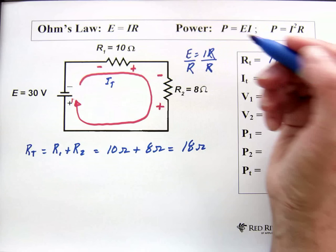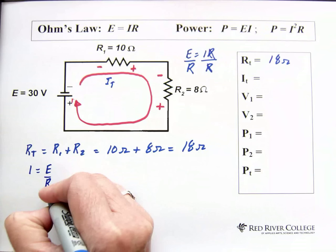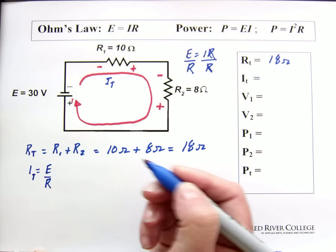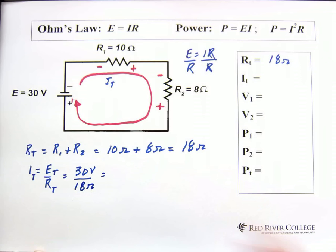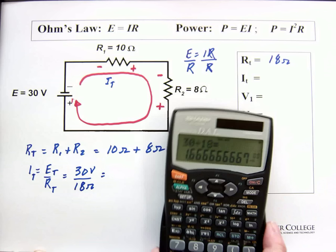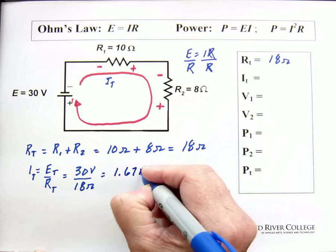And we're left with current equals E over R. So, I equals E over R. Now, this is total current we're looking for. We have total voltage, total resistance. The total voltage is 30 volts. And the total resistance is 18 ohms. So, we do that division. 30 divided by 18. And we end up with 1.6666. So, I'm going to say that's 1.67 amps. And that's our total current.